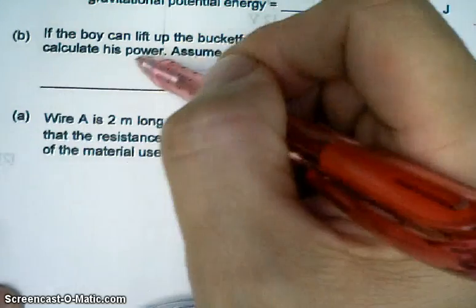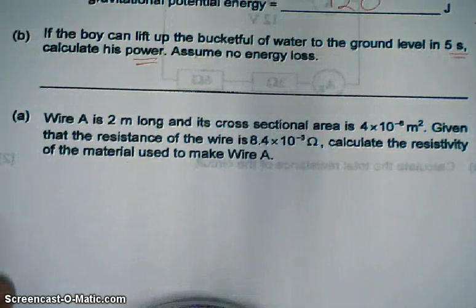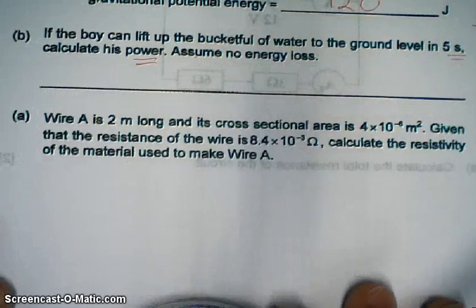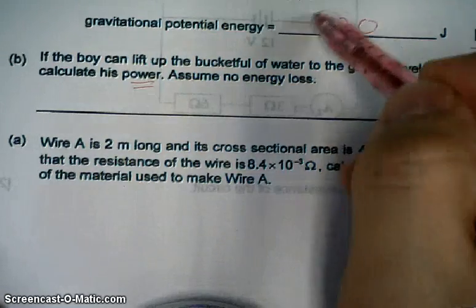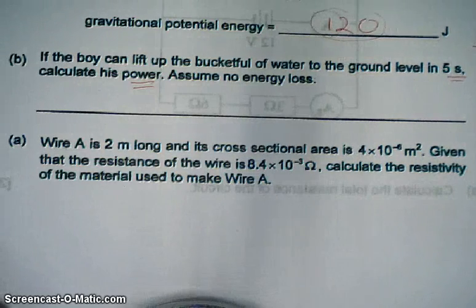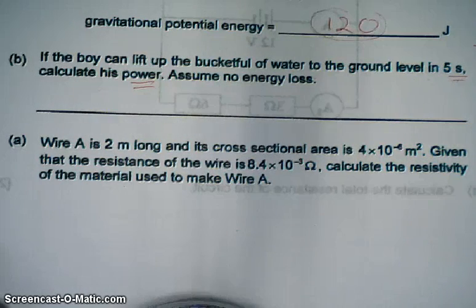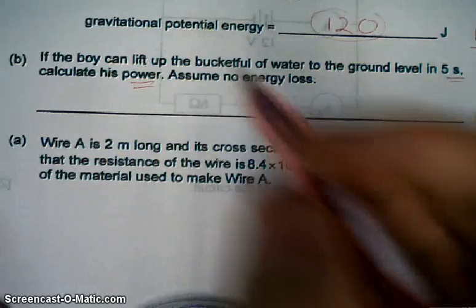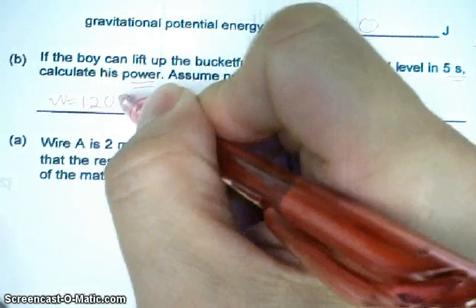This is power. Power means the rate the energy is used. Of course I assume no energy loss. So in the previous part, the gain in GPE is equal to 120 joules which is also equal to work done by the boy. So W here equal to 120 joules.